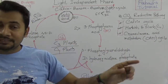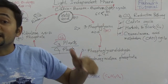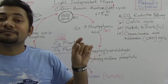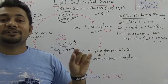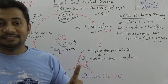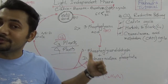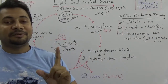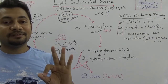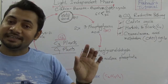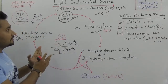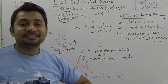In C4 plants, C4 cycle is going on, and in C4 cycle the first permanent compound is oxaloacetic acid. But in C3 cycle, the first permanent compound is the 3-carbon phosphoglyceric acid. This is all about the light independent phase.